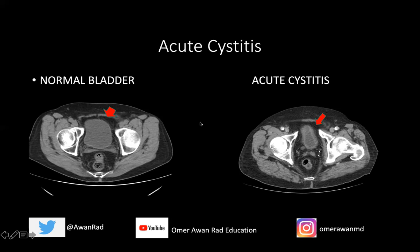This is a nice example of what acute cystitis would look like — wall thickening of the bladder and hazy fat stranding surrounding the bladder. This typically presents with acute pelvic pain, dysuria, pain with urination, pyuria, white blood cells in the urine, increased frequency and urgency of urination. This is typically seen in diabetics. Often females get this because of the shorter urethra compared to males, sexual intercourse, and indwelling catheters are all risk factors. Acute cystitis is typically treated with antibiotics, typically Bactrim — the drug of choice for acute cystitis in patients that aren't allergic to Bactrim.